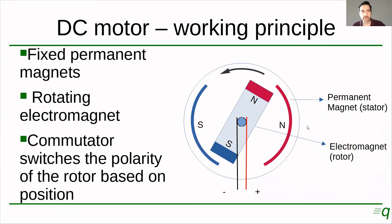Another application of this combination between magnetism and electricity is the DC motor. So we're going to have a look at the working principle of a DC motor. DC motors come in a wide variety of configurations and sizes. But the basic functionality is similar to this one. We're going to look at what we call a permanent magnet DC motor. This is the structure of it.